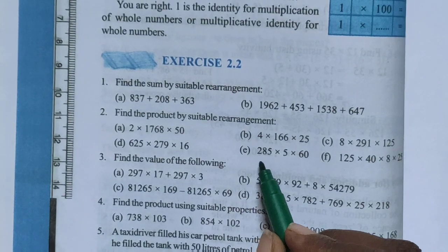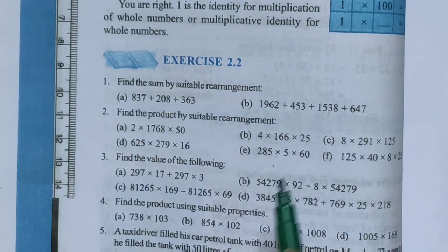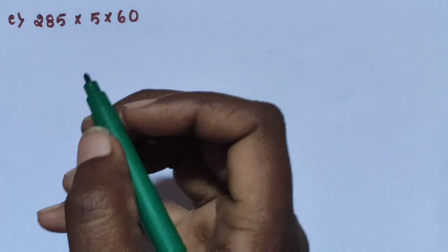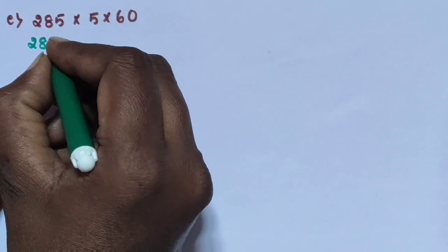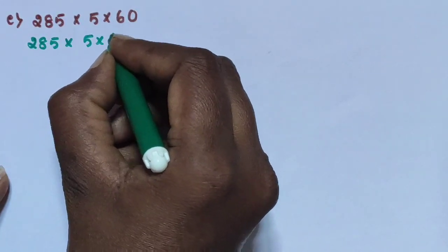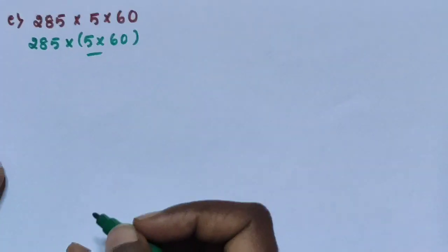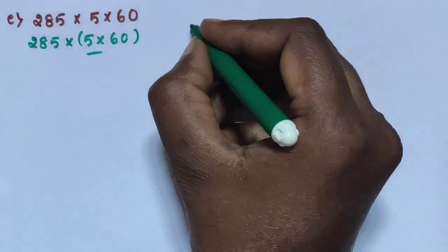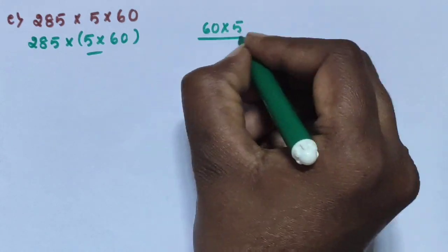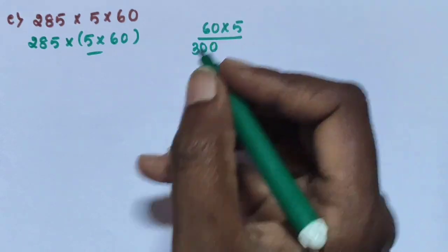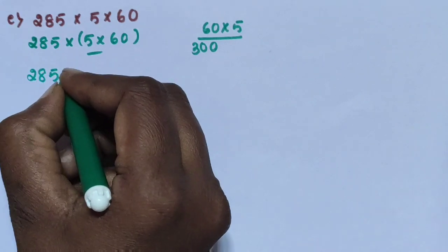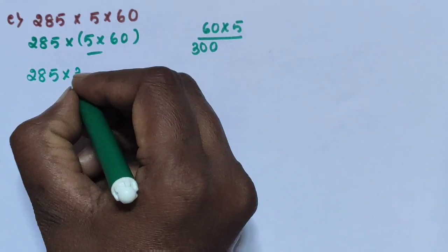Next, sub-question E: 2185 into 5 into 60. First, rearrange the numbers and multiply these 3 numbers: 2185 into 5 into 60. First, multiply 5 into 60: 5 into 0 is 0, 5 sixes are 30. So 5 into 60 is 300.